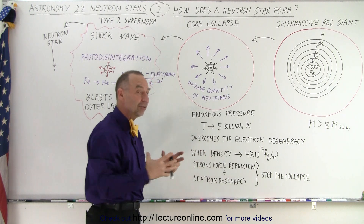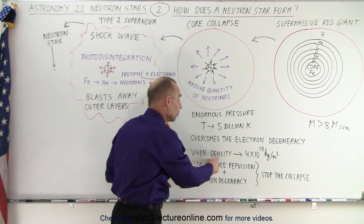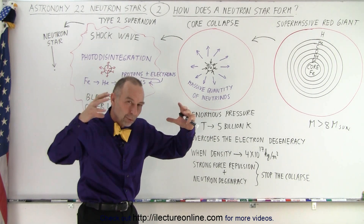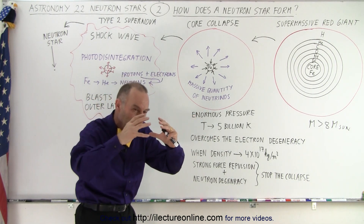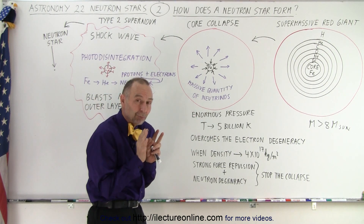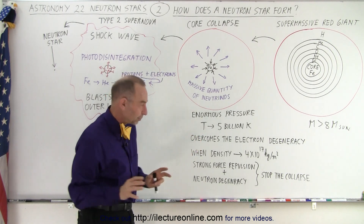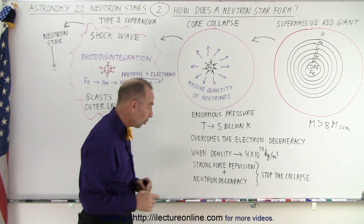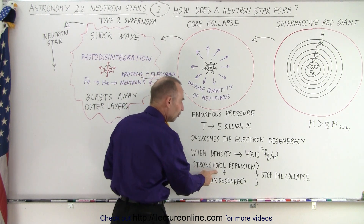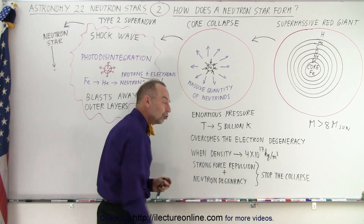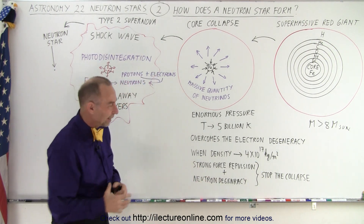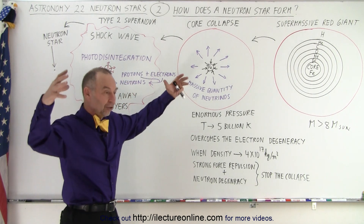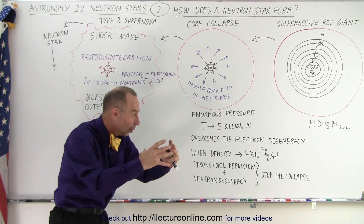Once that happens, a critical density is reached — about 4 times 10 to the 17 kilograms per cubic meter. At that point, as the core is collapsing, it begins to feel pressure in the other direction. What stops the ultimate complete collapse of the core is what we call the strong force repulsion and the neutron degeneracy. These two forces combine to stop the collapse of the core.